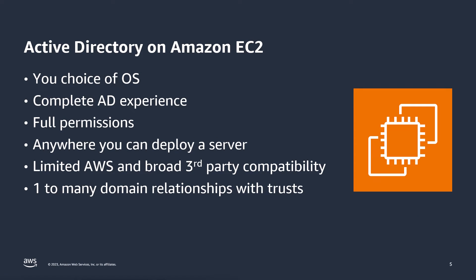Finally, we have Active Directory on Amazon EC2. This offers a lot of flexibility because you get to choose the OS and get the complete AD experience. As a result, you also have full permissions — you control everything. You can deploy anywhere you can deploy a server, so it's available in every AWS region as well as additional options like Outpost or Snowballs. It has limited AWS application compatibility, as not every application can natively integrate without the aid of an AD Connector or AWS Managed Microsoft AD with a trust. But it does offer the broadest third-party compatibility, and it supports one-to-many domain relationships via trust just like AWS Managed Microsoft AD.